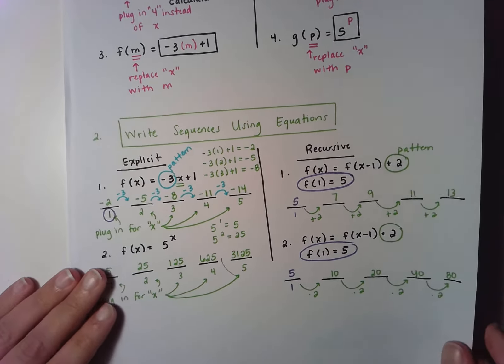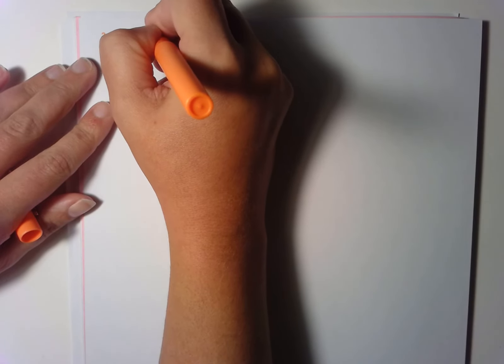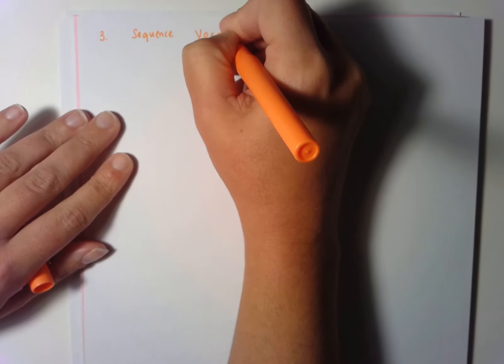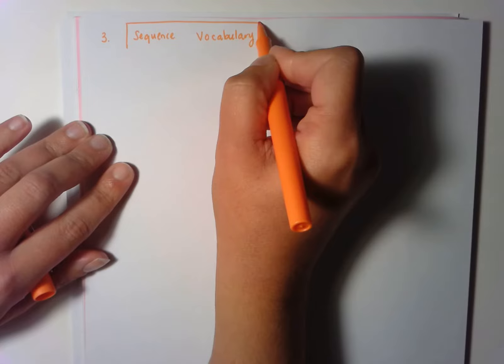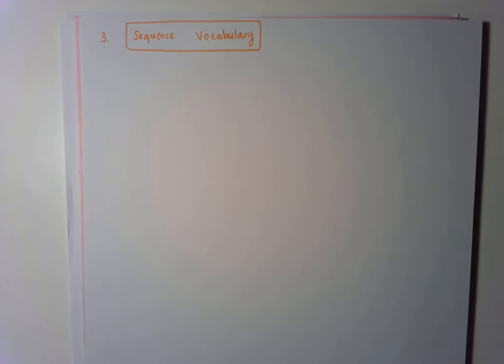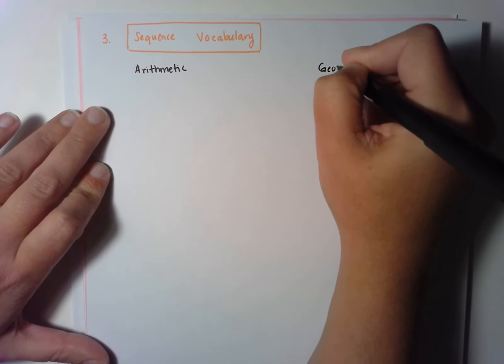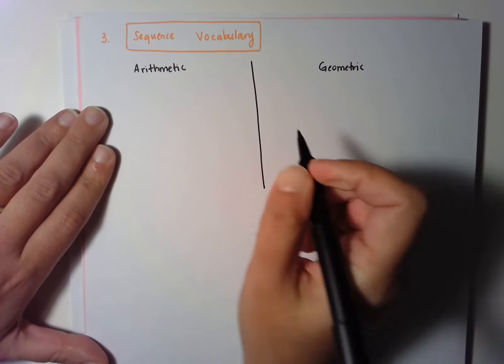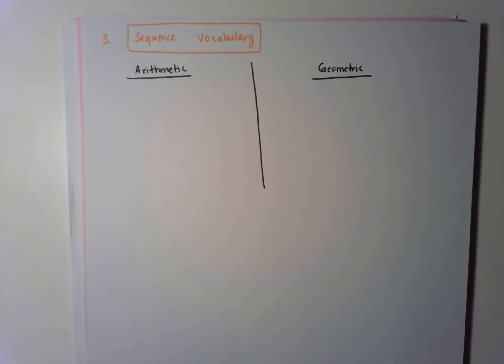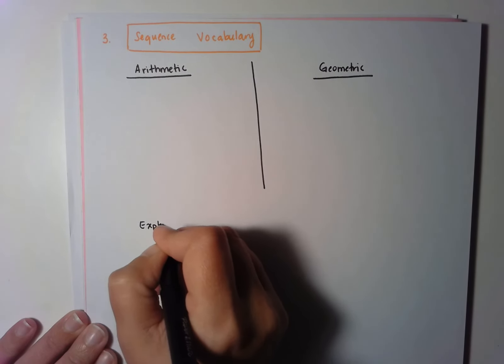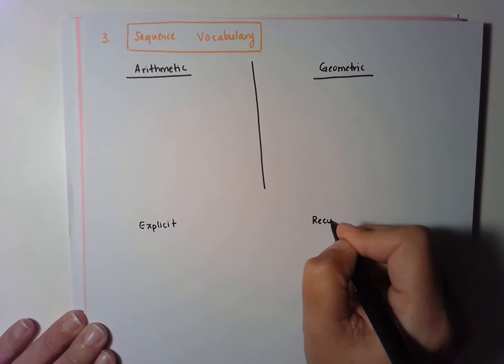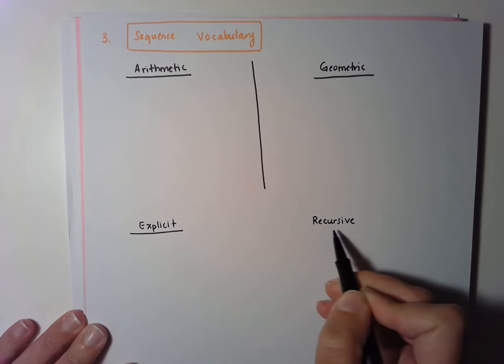The next big topic in this unit is going to be sequence vocabulary. There are two big things I'm going to ask you. First: is this sequence arithmetic or geometric? We need to know how to tell the difference. And second: is the equation explicit or recursive? We're going to need to know how to tell the difference between those two things as well.